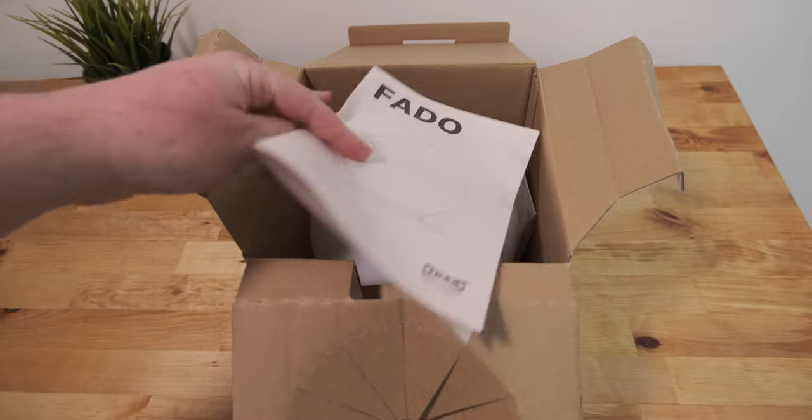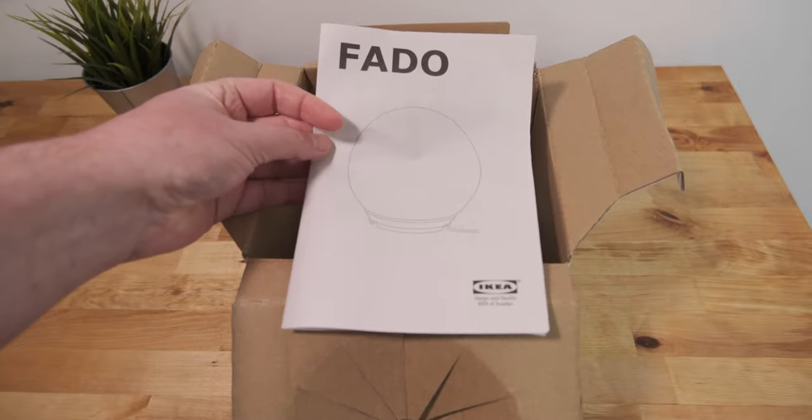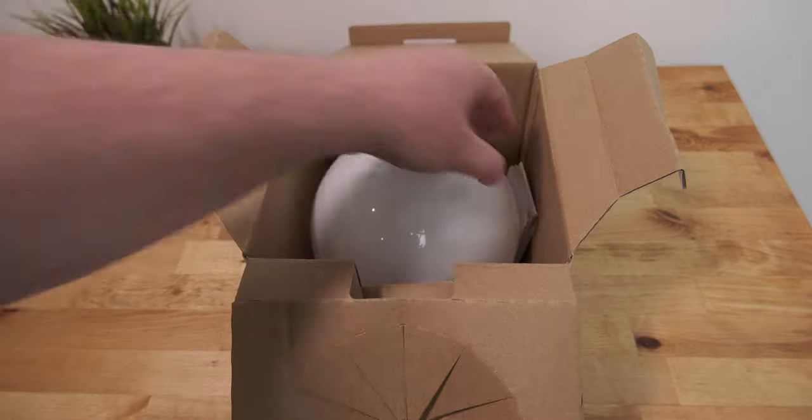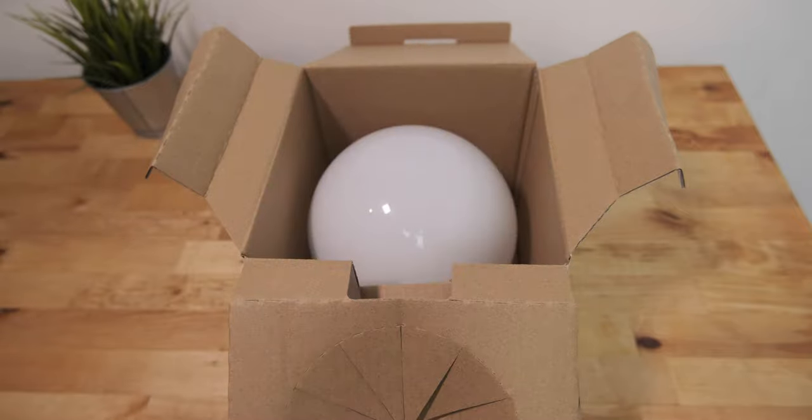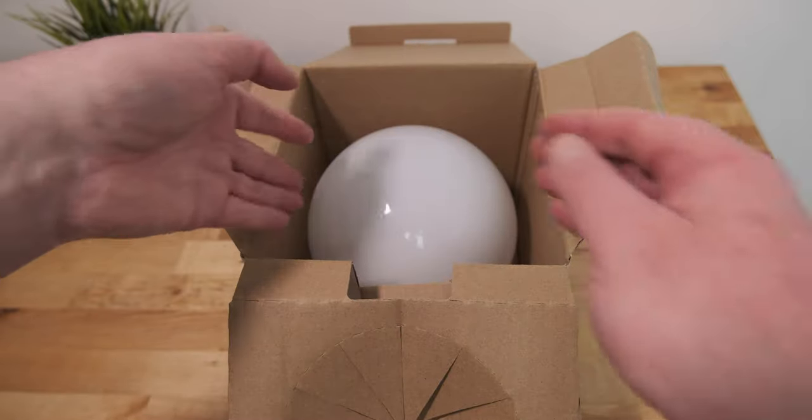Inside the box we have the usual Ikea booklet with instructional diagrams for installation. There's also a safety guide, and finally the lamp itself.